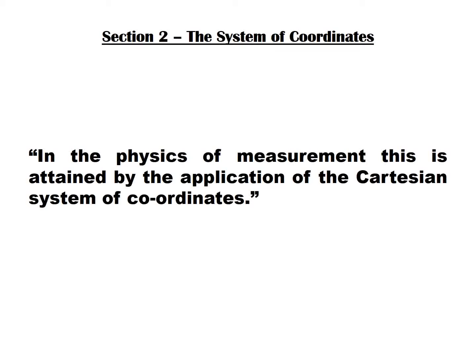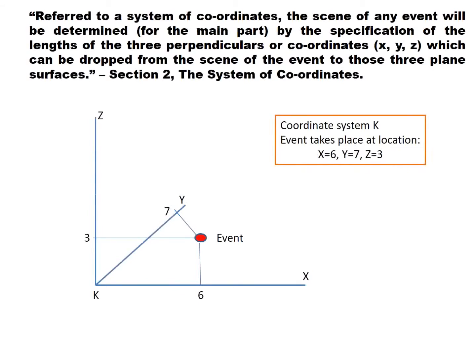He clarifies how we can do this. In the physics of measurement, this is attained by the application of the Cartesian system of coordinates. He takes care to elaborate: referred to a system of coordinates, the scene of any event will be determined, for the main part, by the specification of the lengths of the three perpendicular coordinates, x, y, z, which can be dropped from the scene of the event to those three plane surfaces.